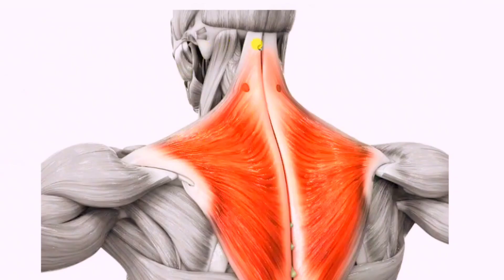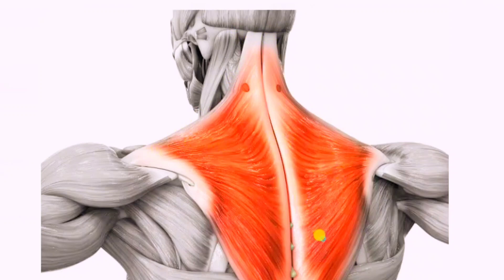This muscle right here is the trapezius muscle, originating from the occipital bone and ligamentum nuchae, and inserting at the lateral third of the clavicle and spine of the scapula.